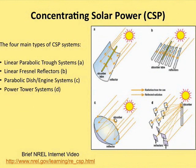Concentrating solar power can be thought of in four different forms: the linear parabolic trough system, the linear Fresnel reflector system, the parabolic dish-Stirling engine system, and the power tower system. We'll go through each of these systems, talk about how they work, and discuss the advantages of one over another.